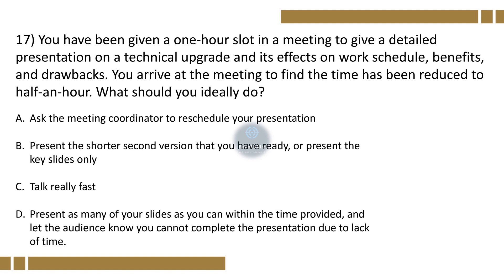Question 17. You have been given a 1-hour slot in a meeting to give a detailed presentation on a technical upgrade and its effects on work schedule, benefits and drawbacks. You arrive at the meeting to find the time has been reduced to half an hour. What should you ideally do? Option A, ask the meeting coordinator to reschedule your presentation; Option B, present the shorter second version that you have ready or present the key slides only; Option C, talk really fast; Option D, present as many of your slides as you can within the time provided and let the audience know you cannot complete the presentation due to lack of time. The correct option is B.